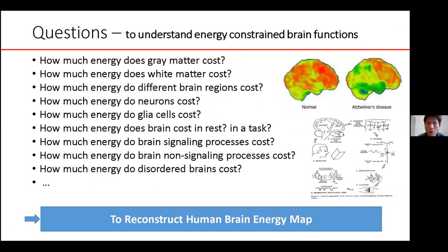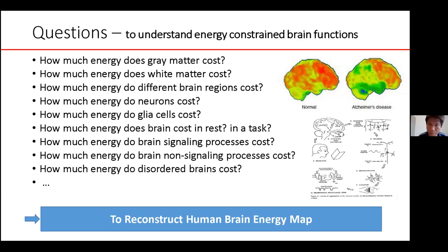We have a lot of questions we want to ask about the brain regarding energy consumption: how much energy does the gray matter and white matter cost, how much energy does it cost for different brain regions, how much energy do neurons and glial cells cost during cognitive perception, and how much energy does the brain cost in a resting state versus during behavioral tasks? We have studied all these questions over the last several years from both experiment and computational modeling combined together, and we know some of the answers.